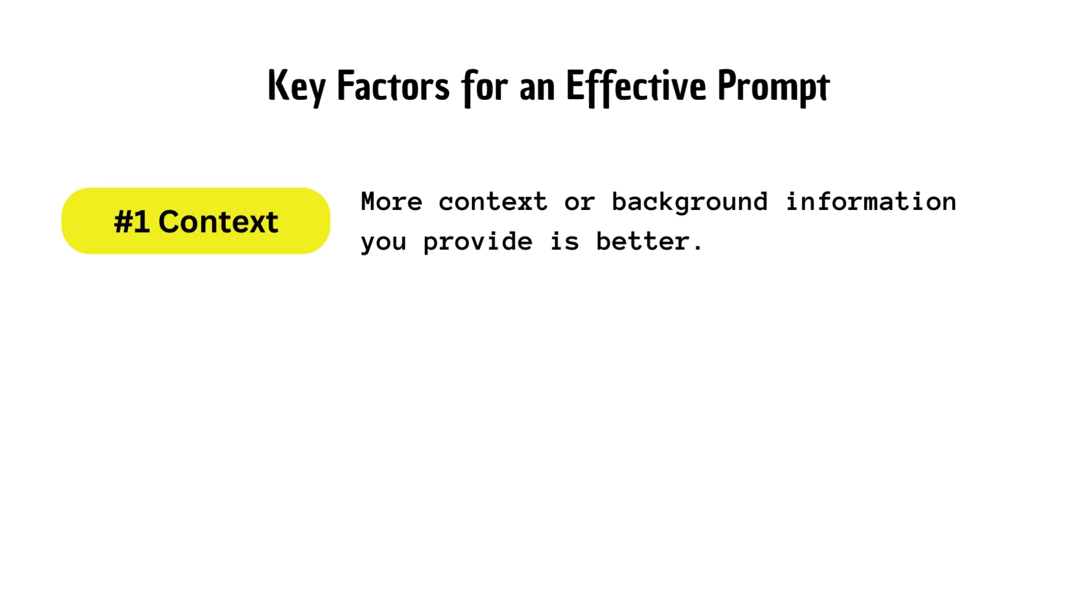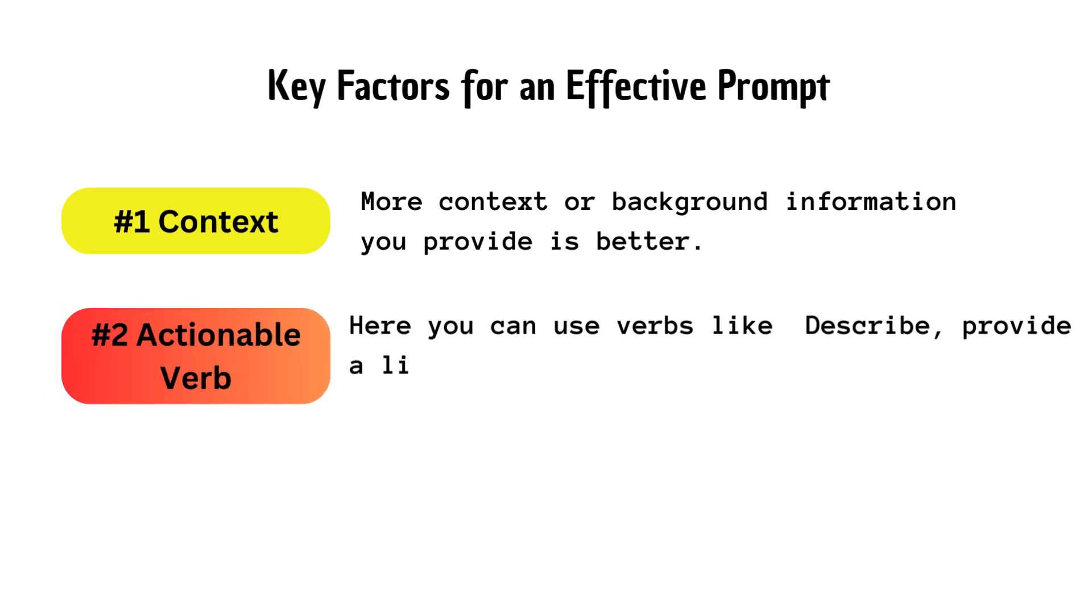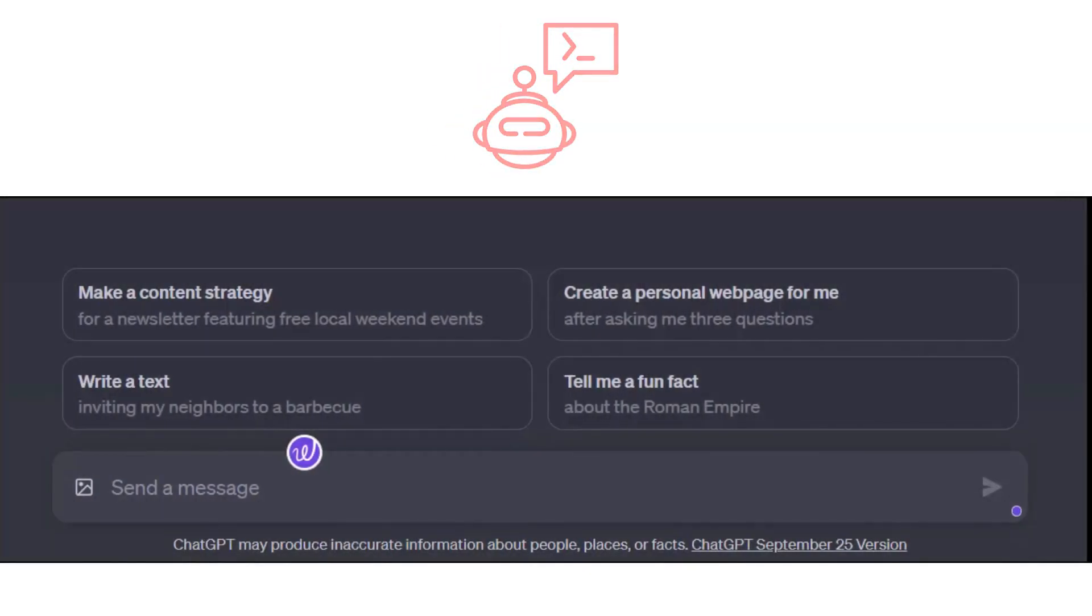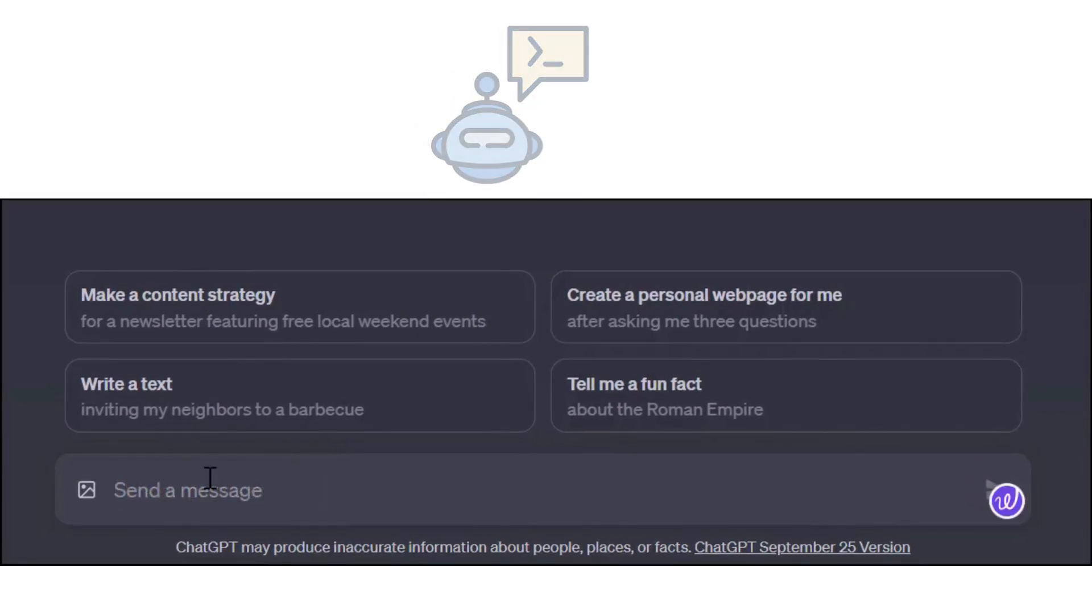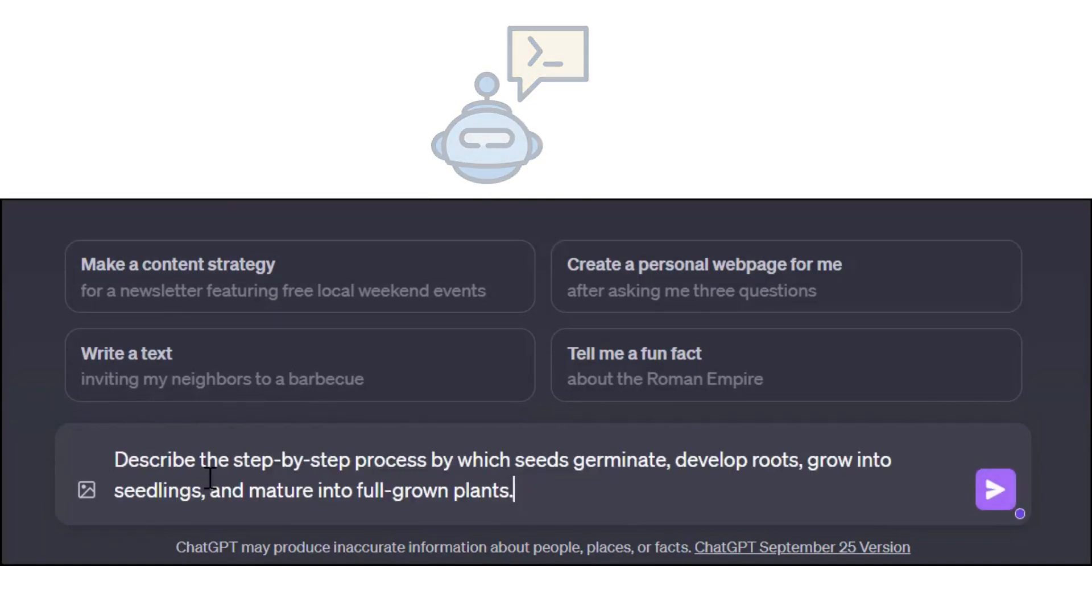Key factors for an effective prompt, number two is actionable verbs. An actionable verb refers to a verb that clearly and directly communicates a specific action or desired outcome. Here, you can use verbs like describe, provide a list, compare, analyze, summarize, or interpret. For example, a basic prompt: How do plants grow? Refined prompt: Describe the step-by-step process by which seeds germinate, develop roots, grow into seedlings, and mature into full-grown plants.